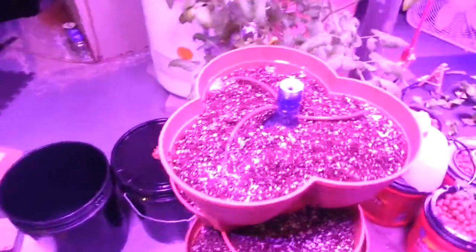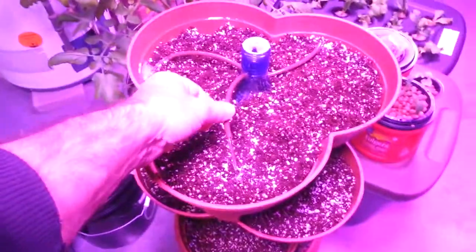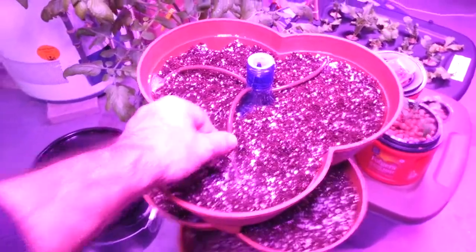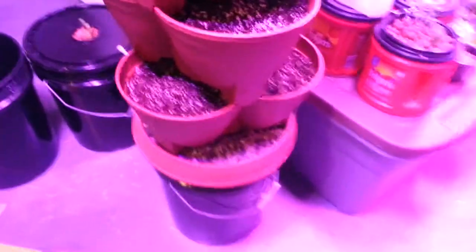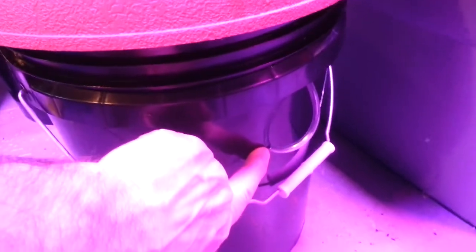Alright guys, so we're set up, got a drip going with coco and perlite. Even put a little level gauge here just through a small hole in the side of the bucket.